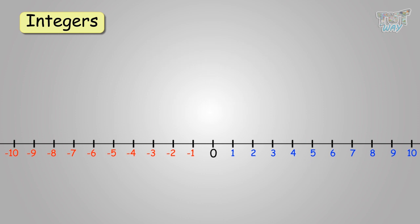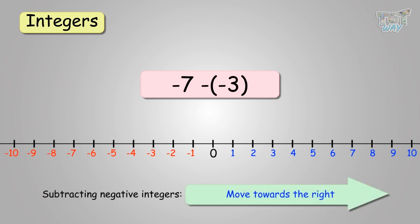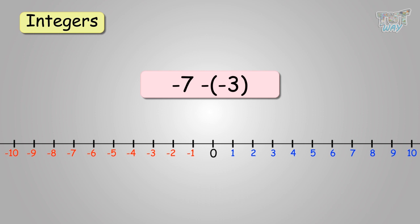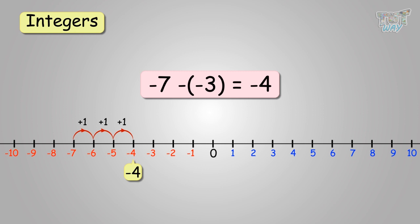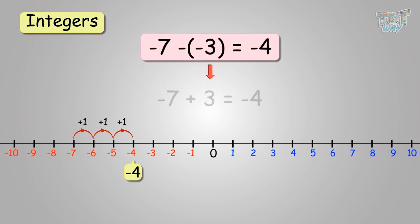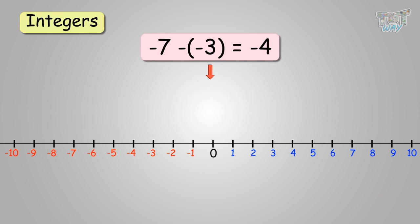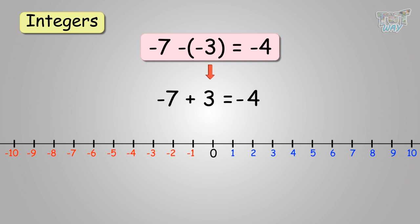Next, subtract negative 3 from negative 7. We learned that for subtracting negative integers, we move towards the right. So, 3 places towards the right from negative 7: negative 7 to negative 6, then negative 5, then to negative 4. We get negative 4 as the final answer. Negative 7 minus negative 3 is the same as negative 7 plus 3. We have to add two integers that have different signs: positive 3 and negative 7. We find their difference, and put the sign of the bigger number with the answer. Difference between 7 and 3 is 4, and the sign will be negative because negative 7 is the larger number.